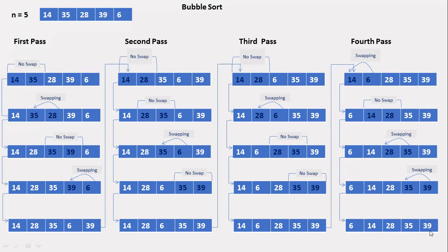Notice that after each iteration, at least one value moves to the end — 39 after the first, 35 after the second, 28 after the third, and 14 after the fourth. So if you are sorting n elements, you need n minus 1 iterations, and automatically the last element will reach its correct position. This is done with the help of loops.